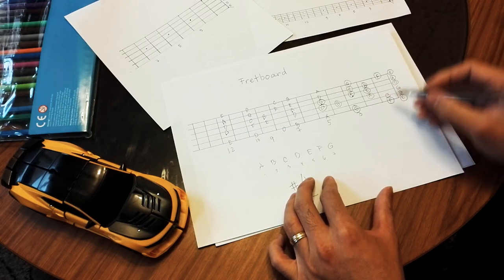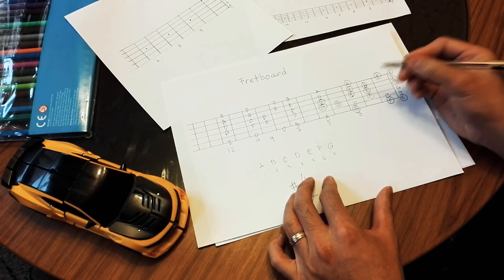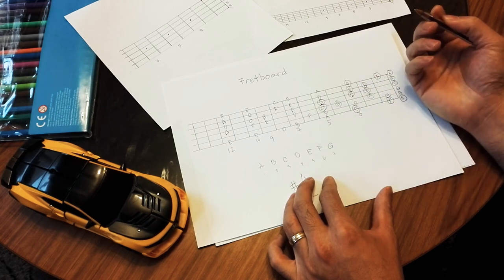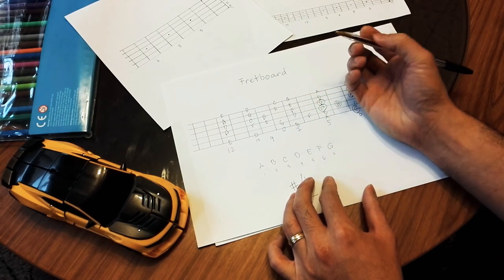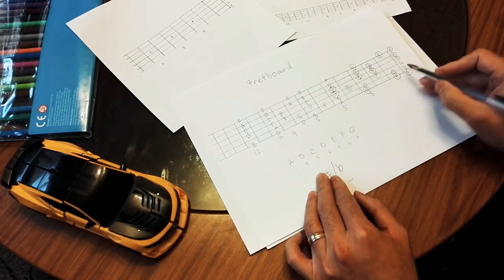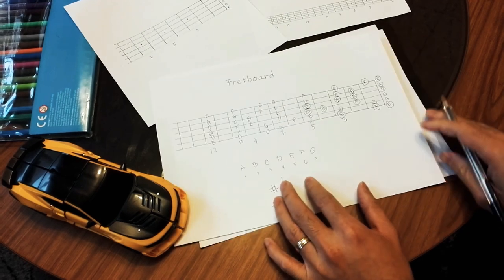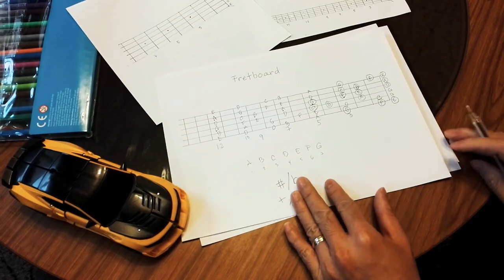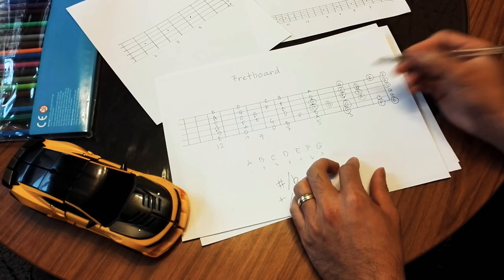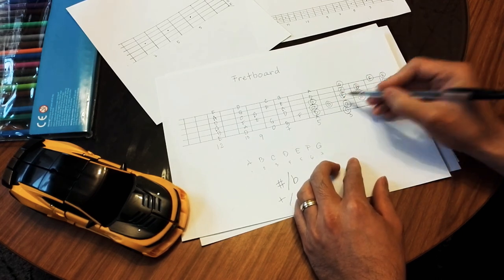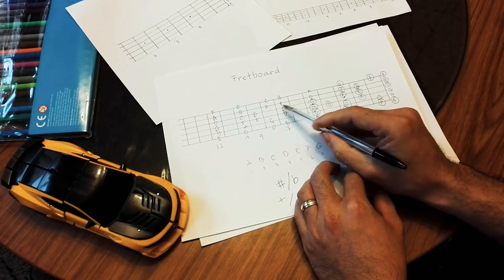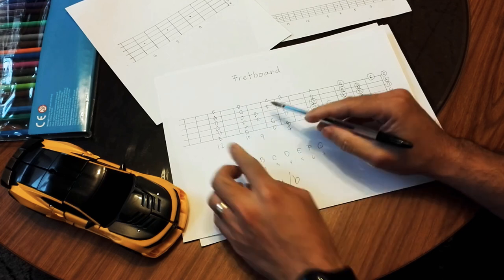And then there's another octave here which is D and D, E and E, F and F, G and G, A and A, B and B. So that's your octave pattern.